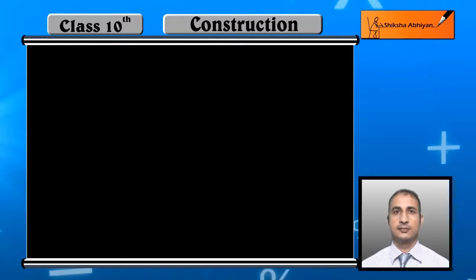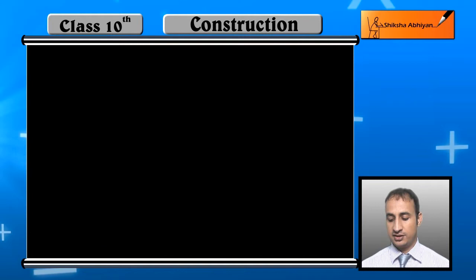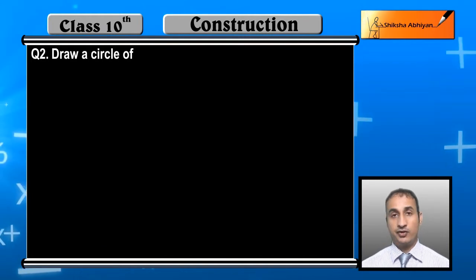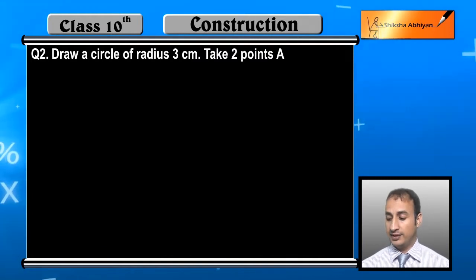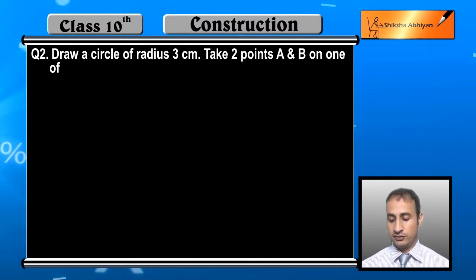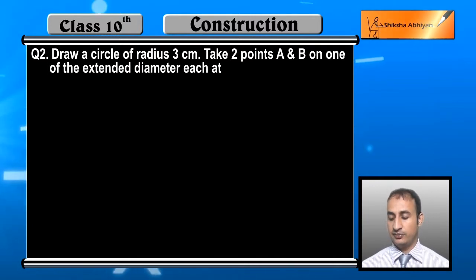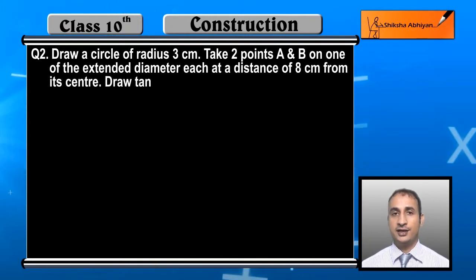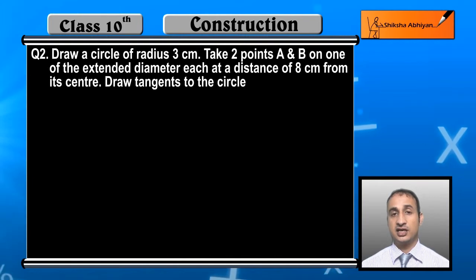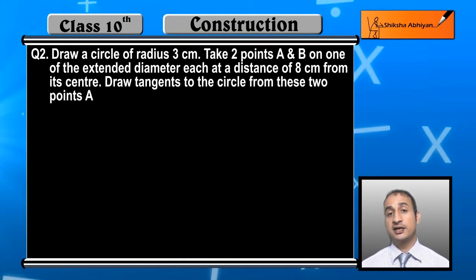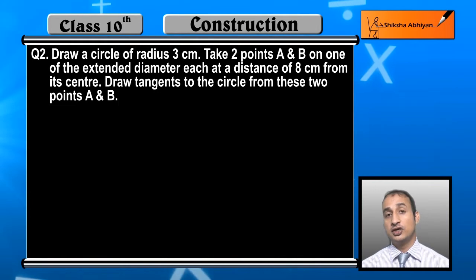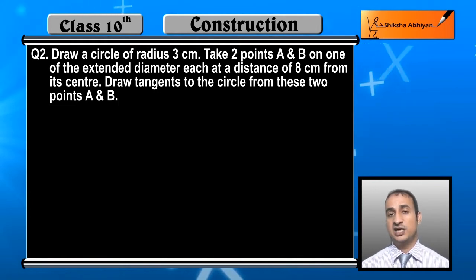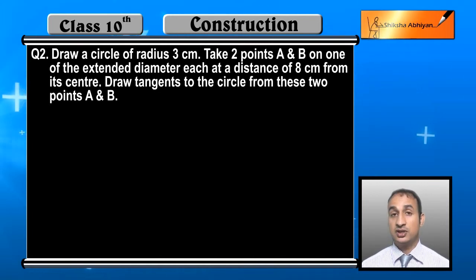The next question is: draw a circle of radius 3 centimeters. Take two points A and B on one of its extended diameters, each at a distance of 8 centimeters from its center. Draw a tangent to the circle from these two points A and B.